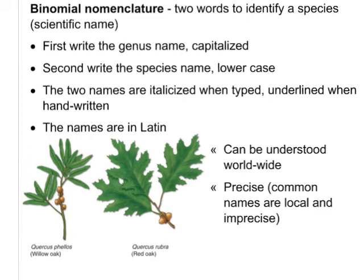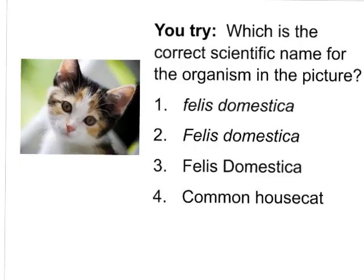Here are some examples: we have Quercus phellos and Quercus rubra — a willow oak and a red oak. You'll notice the genus word is capitalized and the species name is lowercase. They are both italicized as well.